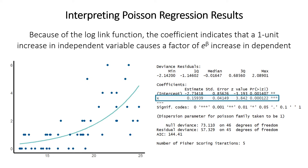The coefficient tells us the effect of that independent variable, but because we're using a logarithmic link function, the coefficient is not a linear thing. It means that a one unit increase in the independent variable causes the dependent variable to increase by a factor of e to the coefficient. So the dependent variable would be multiplied by e to the 0.159 for each one unit increase. One important thing to note is that R fits this model assuming the dispersion parameter is equal to one — meaning it assumes the mean equals the variance.